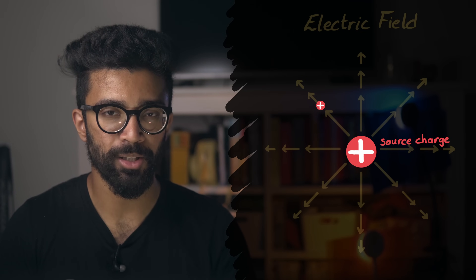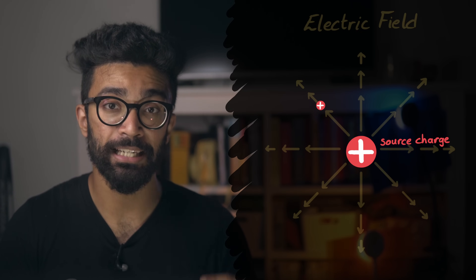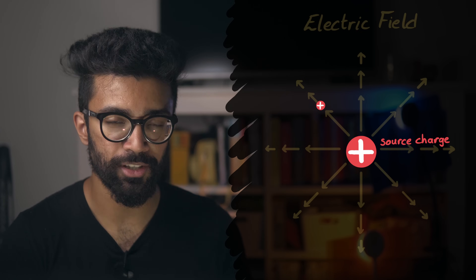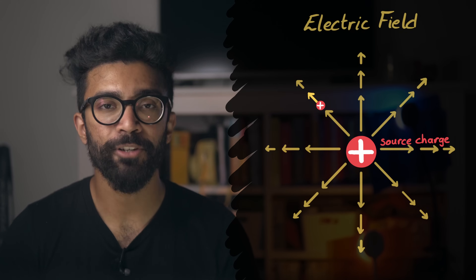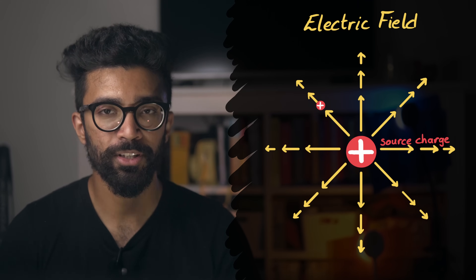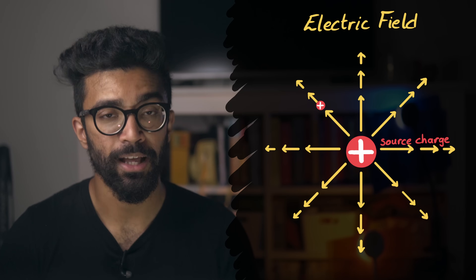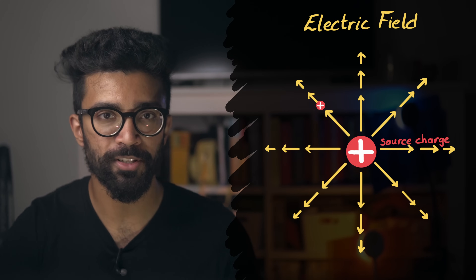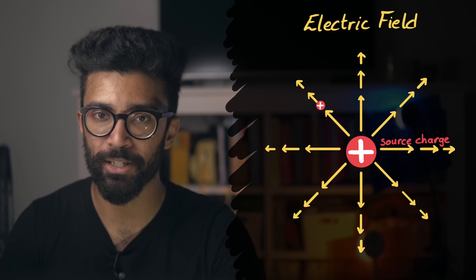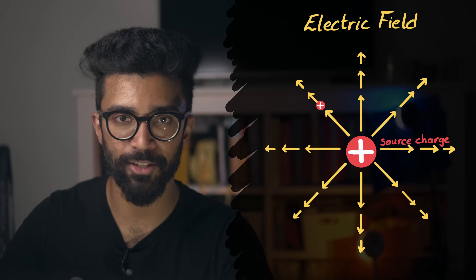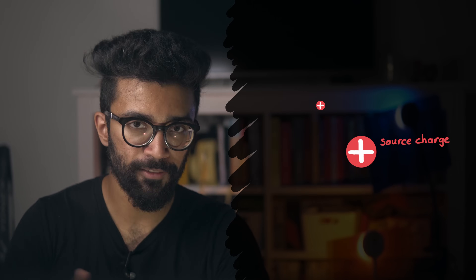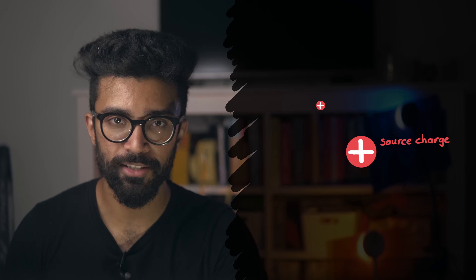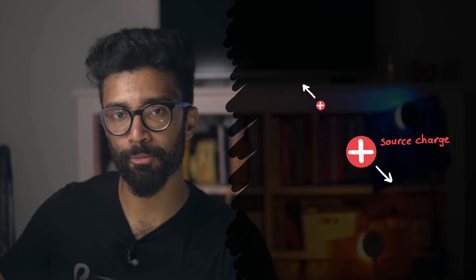Well, this particle will experience an electric force in this direction due to the source positive charge. The electric field lines show the direction and the size of the force that the small charge will experience at different points in space. And this makes sense because we know that positively charged objects repel each other — they have the same charge, so they repel.